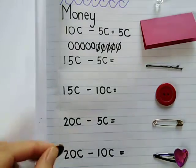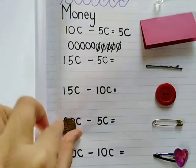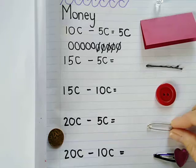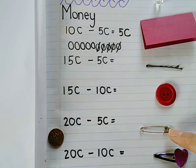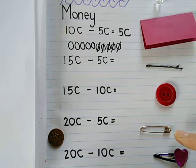For the next one I have 20 cents and this pin costs 5 cents, so I'll do my minus sum for that and remember my C for my answer.